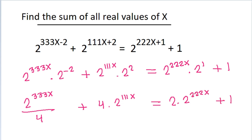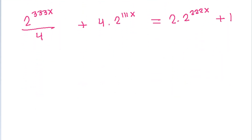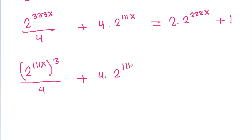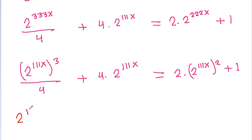And 2 power 333x is (2 power 111x) cubed, so we get (2 power 111x) cubed divided by 4 plus 4 times 2 power 111x is equal to 2 times (2 power 111x) squared plus 1. Now if we let t = 2 power 111x, then we substitute accordingly.